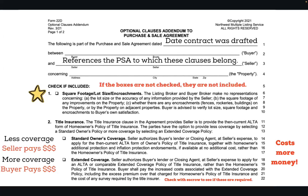The first one — always a really great box to check even if you use no other box — is square footage and lot line size encroachments. It's a way for us to say we can't verify lot lines, square footage, or anything else, so please hold us harmless. The buyer will be deciding these things to their own satisfaction. It kind of gets us off the hook, so that's always a suggested box.